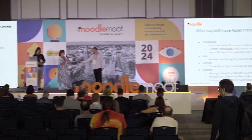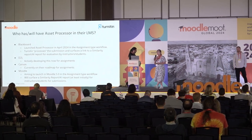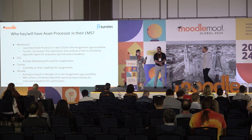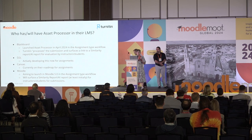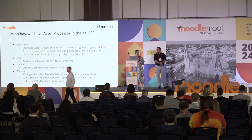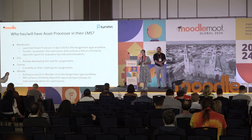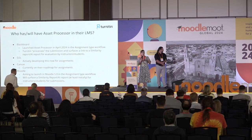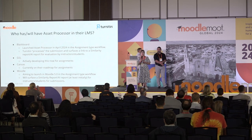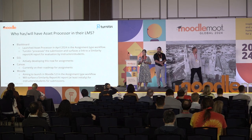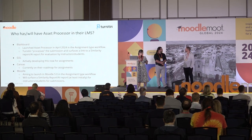So who will have Asset Processor? Blackboard launched Asset Processor in April 2024, and in their assignment type workflow, Turnitin processes the submission and surfaces a similarity or originality report and an AI report for evaluation by instructors or students. D2L is actively developing this now for assignments. Canvas has it currently on their roadmap for 2025. Moodle is aiming to launch Asset Processor in Moodle 5.0 in the assignment type workflow, surfacing the similarity report and AI report for instructors and students.